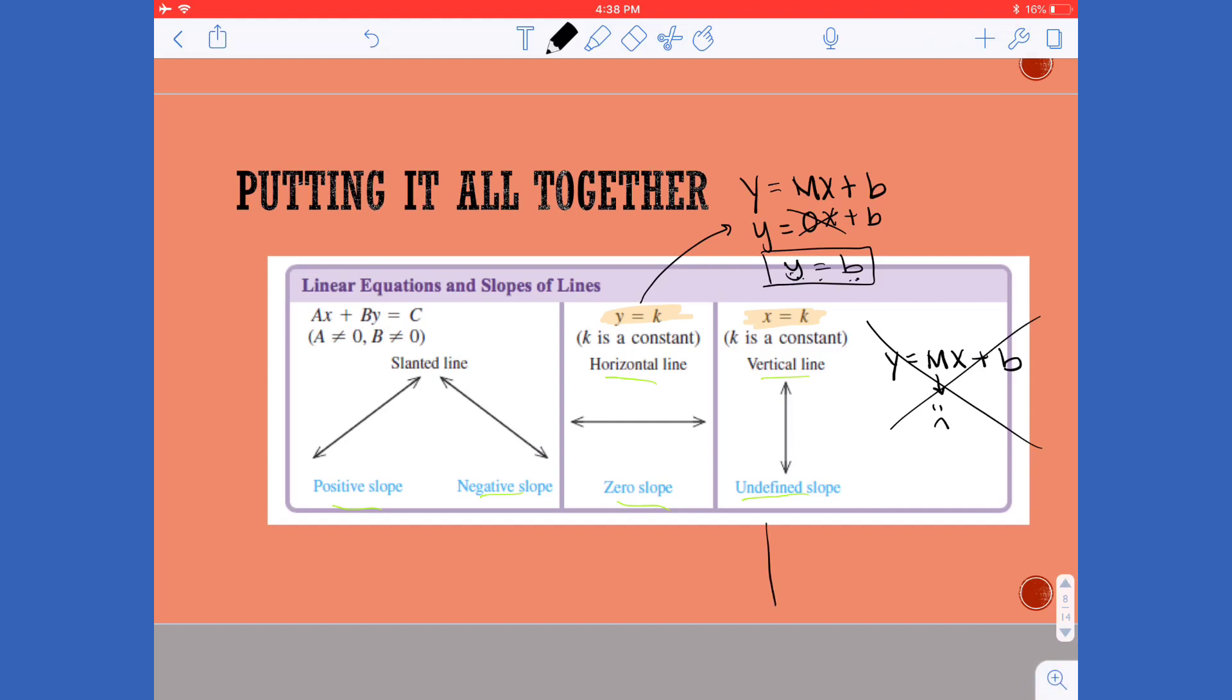Instead we're going to use the x value that a graph crosses. So if I look at this graph, the equation would be x equals positive 3 because it's going through the third tick mark, so the x equals 3 value, and by writing it as x equals it lets me know that we're dealing with a vertical line.